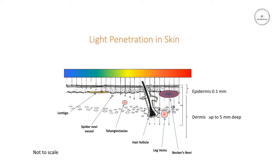Then you might have hair follicles with melanin all around them and inside. Leg veins, which are deeper and larger again. And then maybe something like a Becker's nevi, which can be quite a large mass of melanin that can extend deep into the dermis in some cases.